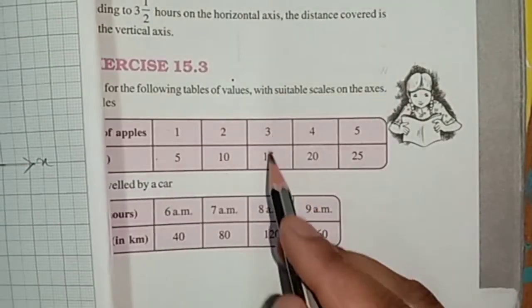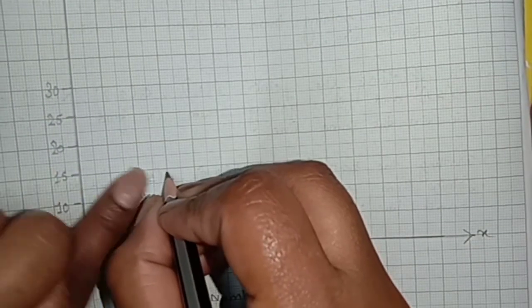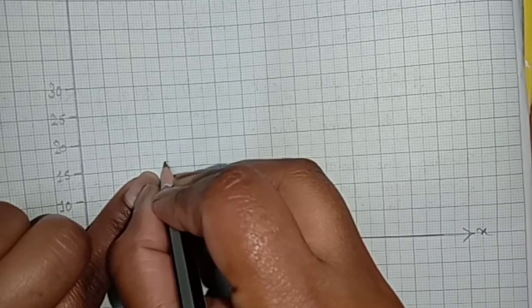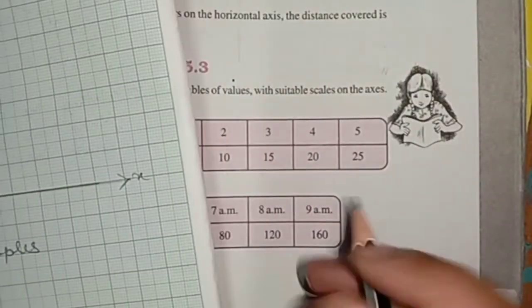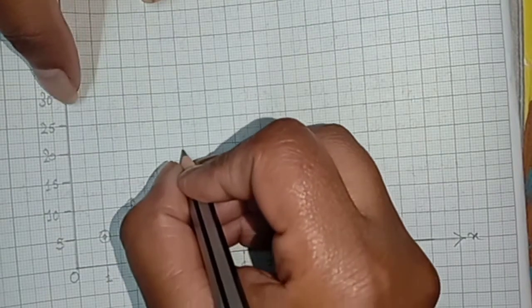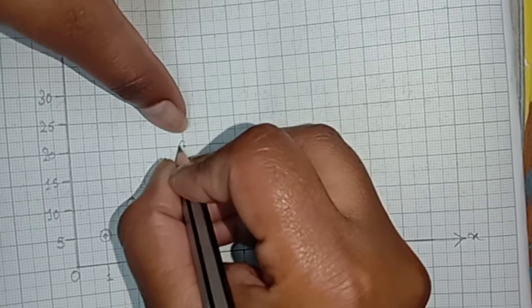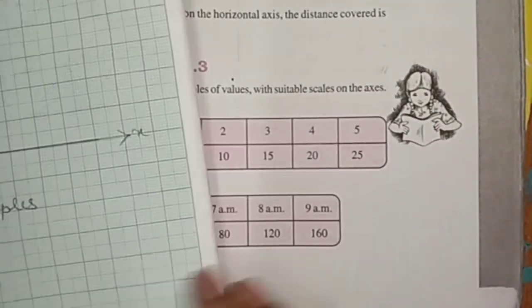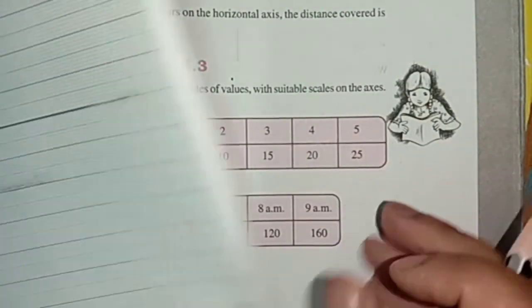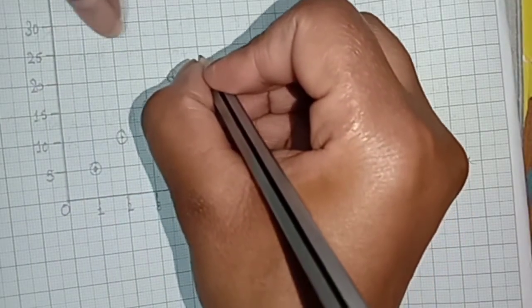Third value is 3 comma 15. X value is 3 and y value is 15. Fourth value 4 comma 20. Next, 5 comma 25. X value is 5 and y value is 25.